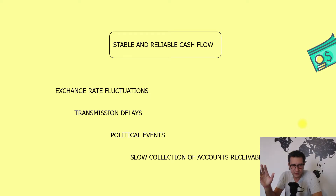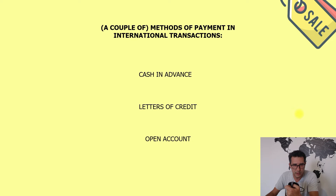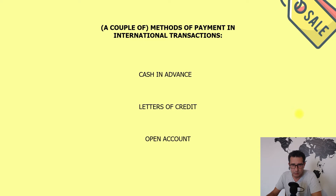I won't get into the details on methods of payment here, but maybe I'll make a dedicated video later. Generally speaking, the most used methods of payment in international transactions are: cash advance — the most secure for the exporter and the least for the importer — letters of credit (sight and term documentary credits), and open account, which is usually used between partners with a long relationship or for intra-company transactions.